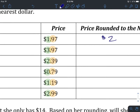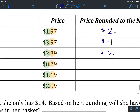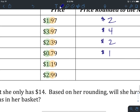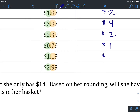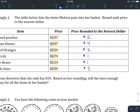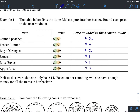The 9 rounds our $3 up to $4. The 3 does not round our $2 up, so it stays the same. The 7 rounds our $0 up to $1. The 1 does not round the first one up, so we stay at $1. And the 9 after the 2 rounds that up to $3. So at this point, we have rounded all 6 of Melissa's items to the nearest dollar.